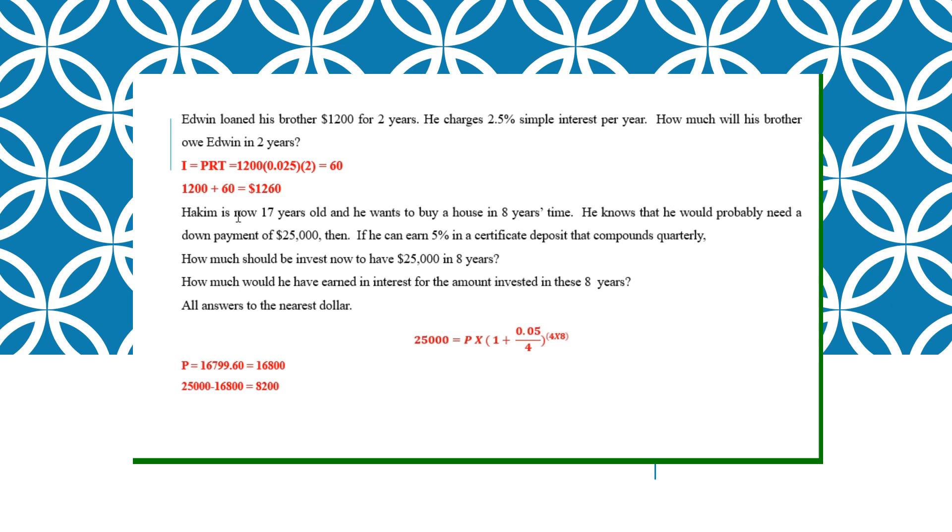The next part, Hakim is now 17 years old. He knows he needs a down payment of $25,000. How much should he invest now? When they ask you things like that, how much should he invest now, what you want is principal. So your future value equals to principal times 1 plus your interest 5% over quarterly to the power of 32. And you'll solve it to find P to the nearest dollar. You have to round off to a whole number, $16,800. How much interest? You minus and you find interest.